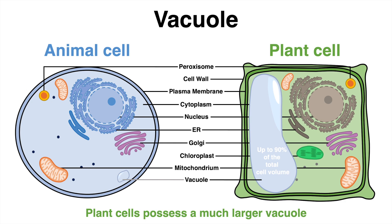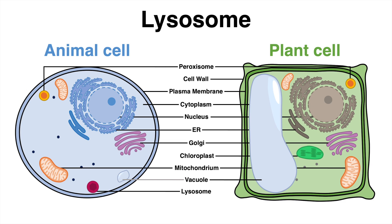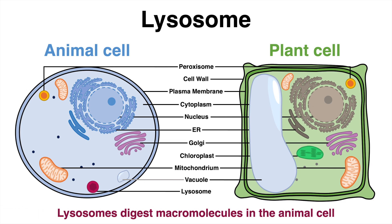In contrast to plant cells, where waste disposal is primarily covered by the vacuole, animal cells possess different organelles. Lysosomes break down and digest macromolecules in the animal cell. Further, lysosomes are part of the endomembrane system, which works together to package, modify, and transport proteins or lipids.